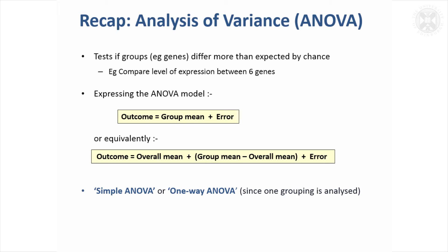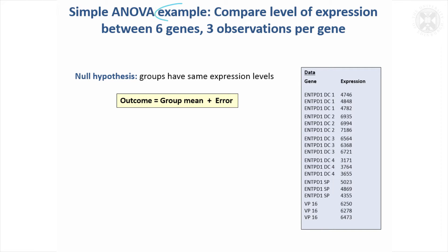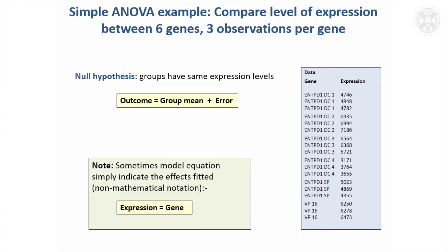Sometimes that could be called a one-way analysis of variance as well. That's just a simple one, and that was the example we looked at where expression levels were measured on six different genes. We wanted to find out if they were different.